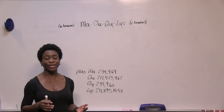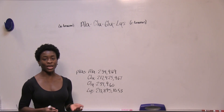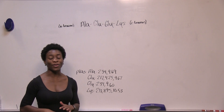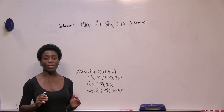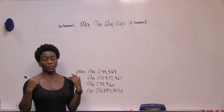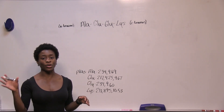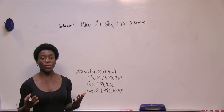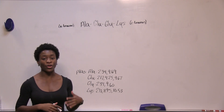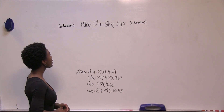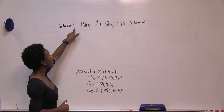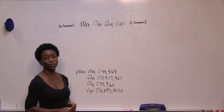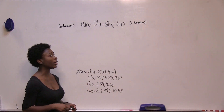Now we're going to look at finding the isoelectric point for peptide chains. This process is very similar to finding it for amino acids; however, there is one major difference. The carboxyl and amino groups at the alpha carbon that were ionizable before won't be in peptide chains because they're within peptide bonds. However, the amino group at the N-terminus and the carboxyl group at the C-terminus will be available to ionize because they won't be within peptide bonds.